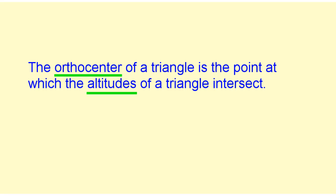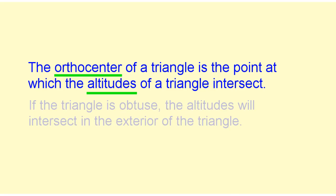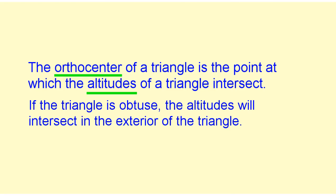The orthocenter of a triangle is the point at which the altitudes of a triangle intersect. If the triangle is obtuse, the altitudes will intersect in the exterior of the triangle.